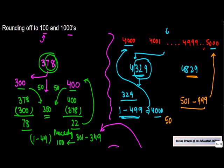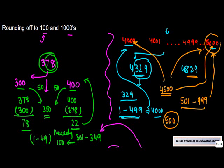And just like we discussed earlier for 50, for 500, let's say for example, if the number is 4500, it is equidistant from 4000 and 5000, but the rounding off is done to the next 1000.